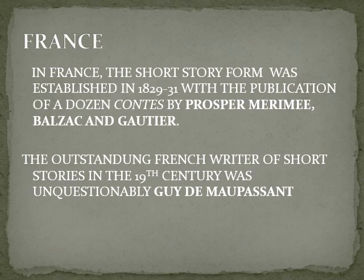In France, the short story form was established between 1829 and 1831 with the publication of a dozen Contes, published by Prosper Mérimée, Balzac, and Gautier. The outstanding French writer of short stories in the 19th century was unquestionably Guy de Maupassant, a very important writer not only in France but in the world in the form of short story writing.